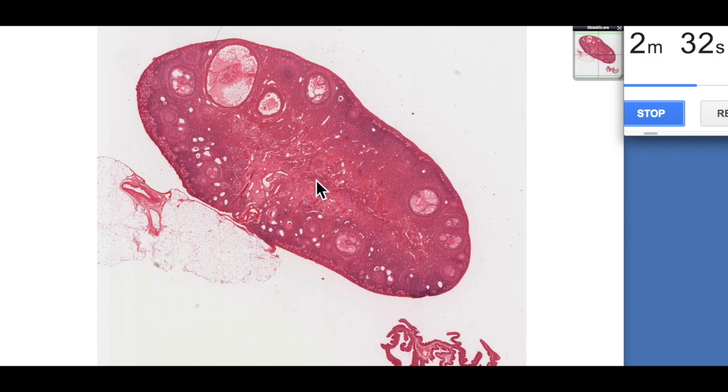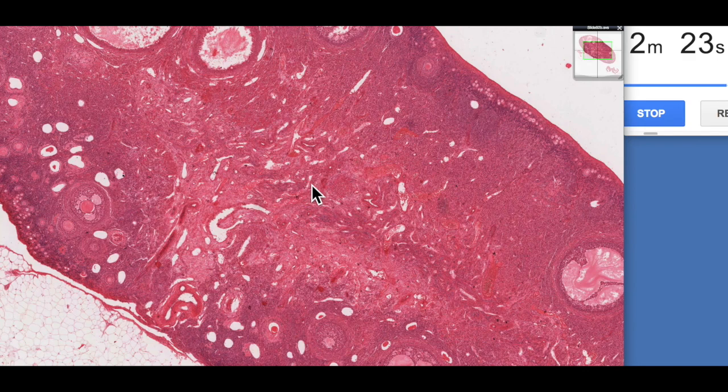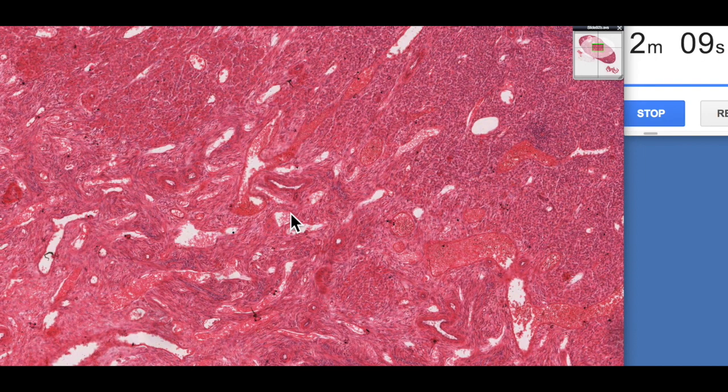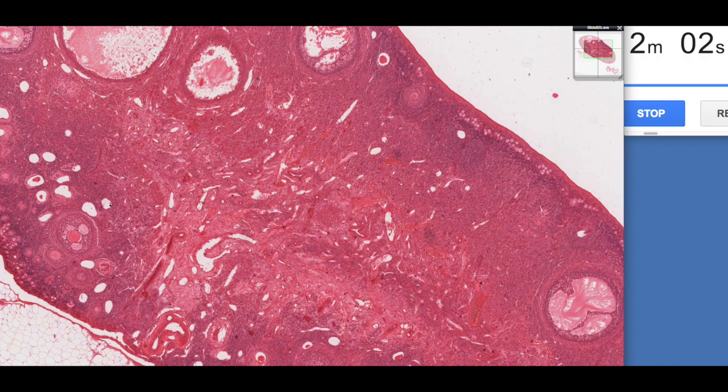The medulla is probably the least interesting region of the ovary, but probably most functionally important, because this is where the ovarian artery and veins run. The blood supply exists within this tissue here. The artery is often described as being helicine. You can see a little arteriole here. Helicine just means helix-shaped or spiral-shaped. It's made up of dense irregular connective tissue, and often the medulla is continuous with the ovarian ligament, which is the ligament which attaches the ovary to the lateral sides of the uterus.